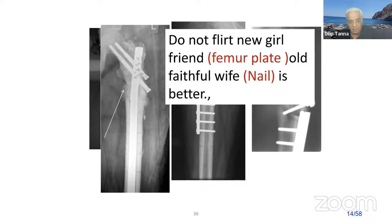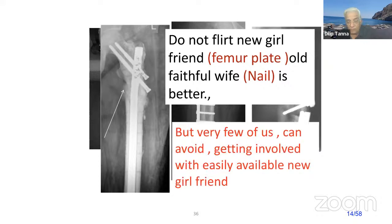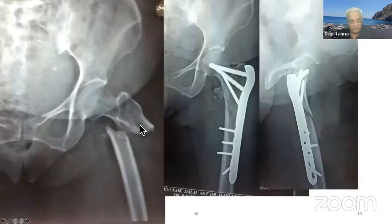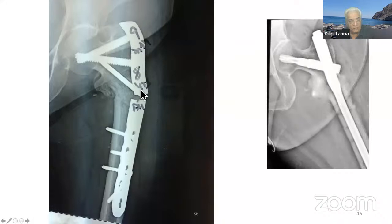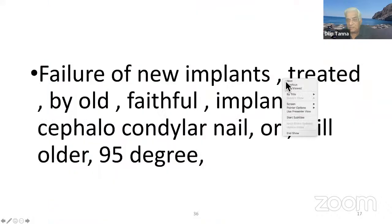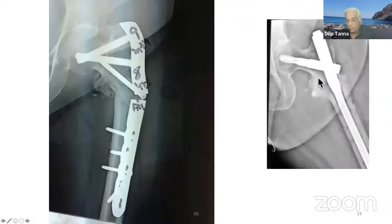These femur plates have come and gone, except the last one — the Smith & Nephew one — which has proved much better, with three big screws going through the neck and a fairly thick plate. Here was another proximal femur implant — again a subtroc fracture, not a stable construct — it broke down in nine months and was ultimately treated again with a PFN with medial bone graft.